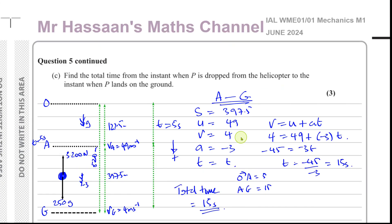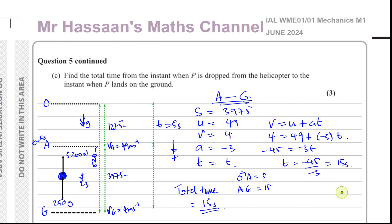That was question number 5 from the Mechanics 1 paper from June 2024, Edexcel International A-Level. Other questions from this paper and from the topic of vertical motion under gravity can be found in the playlists appearing at the end of the video. You can subscribe to the channel using the link shown. Thank you for watching and see you soon.